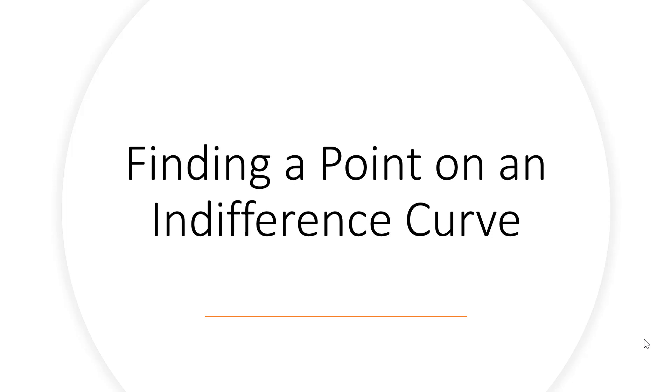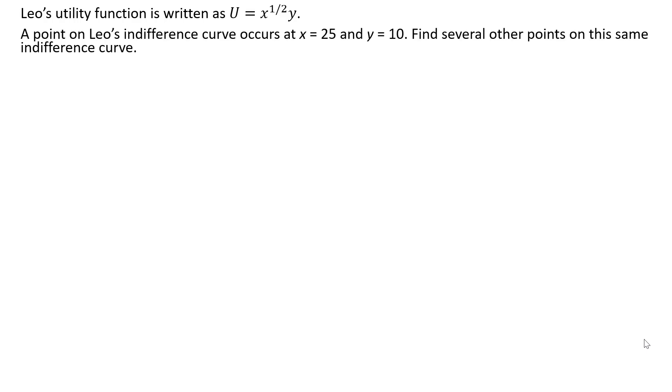Hello. In this video, we're going to look at finding a point on an indifference curve. Leo's utility function is written as U = x^(1/2) * y. A point on Leo's indifference curve occurs at x = 25 and y = 10. We want to find several other points on this same indifference curve.